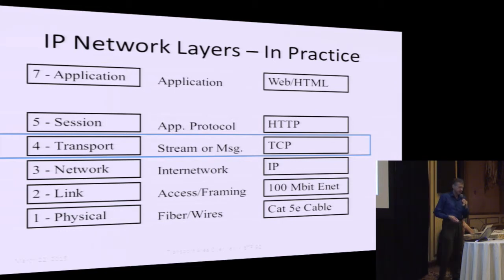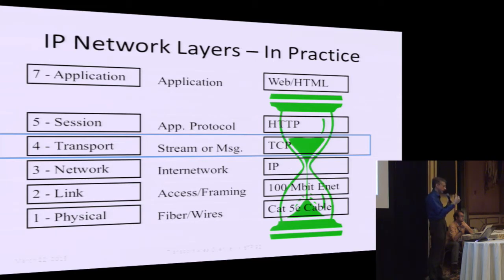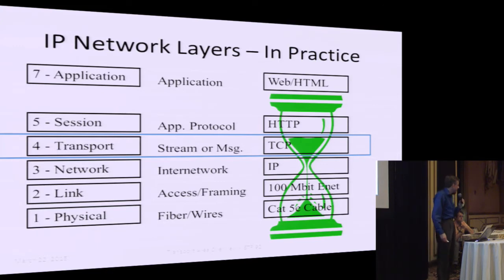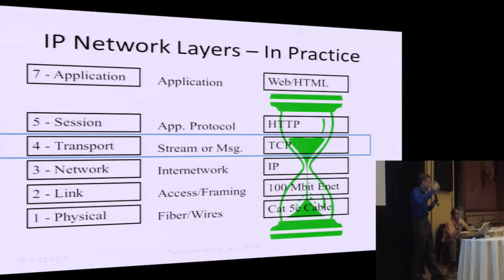The Internet is often referred to as an hourglass architecture. IP is the center or narrow point of the hourglass — everything runs over IP, and IP runs over everything. One of the things going on is that the neck of the hourglass is getting longer. We're seeing what Brian will talk about as ossification, where layer 4 is also now becoming part of that neck, where in practice you need to be running over one of a very small number of protocols at layer 4 to work in the Internet.